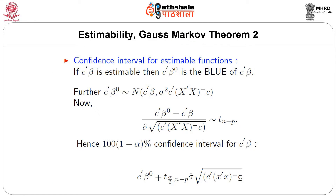Confidence interval for estimable functions. If c-transpose beta is estimable, then c-transpose beta-naught is the BLUE of c-transpose beta. Here BLUE does not refer to the colour of the sky; BLUE refers to a statistical concept — Best Linear Unbiased Estimator — which we will learn in another module. Furthermore, c-transpose beta-naught follows Normal with mean c-transpose beta and variance sigma-squared c-transpose (X-transpose X) g-inverse c.